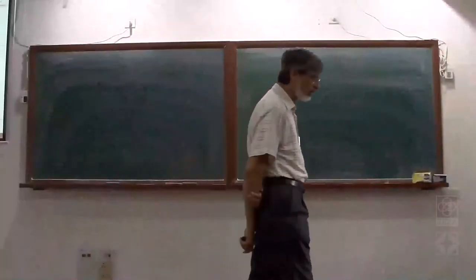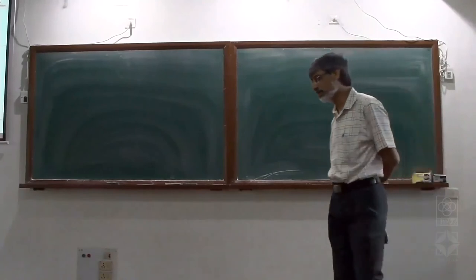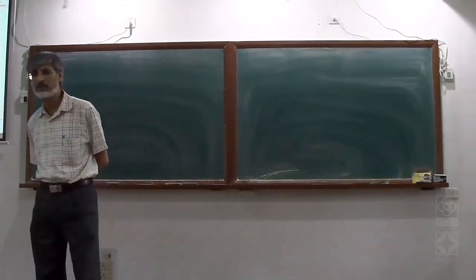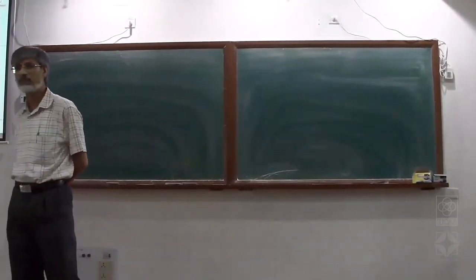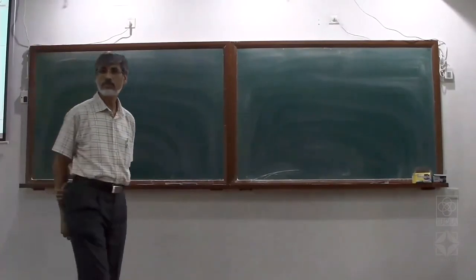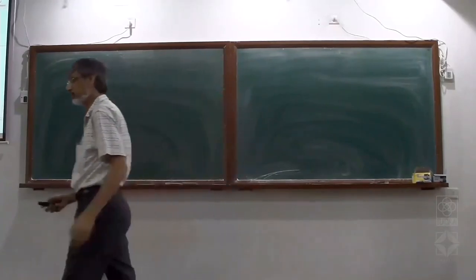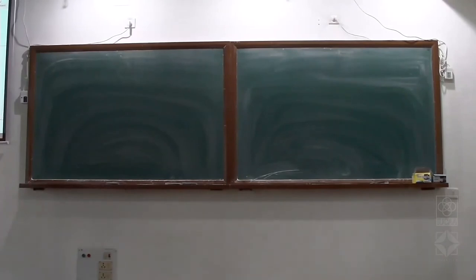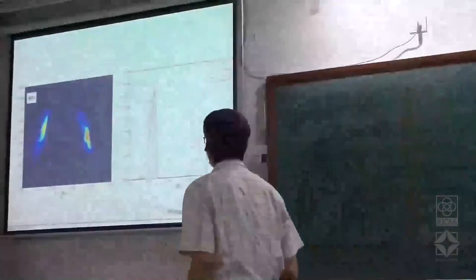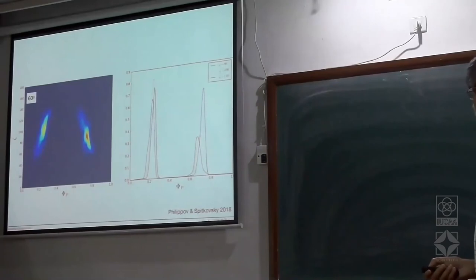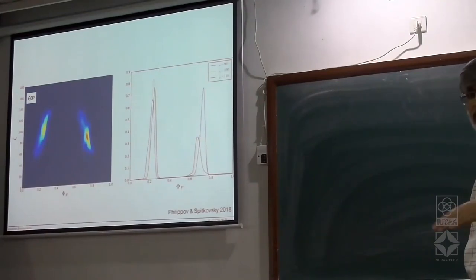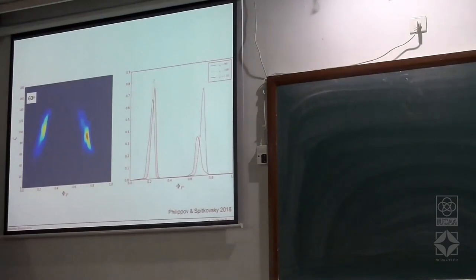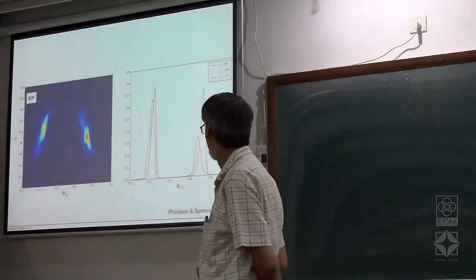These calculations are still very far from using realistic parameters, but many qualitative features come out of these solutions which resemble what you see in pulsar pulses. The pulse profiles shown represent different lines of sight, and they show that some of them are double-peaked. This should be taken as qualitative only.